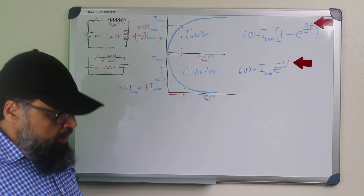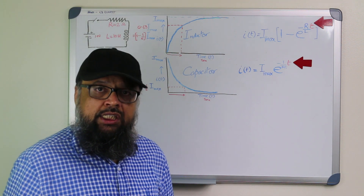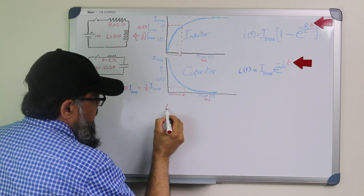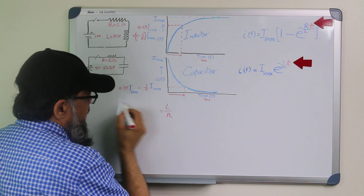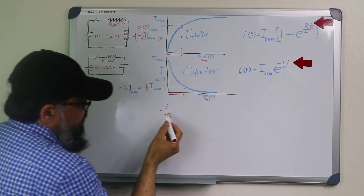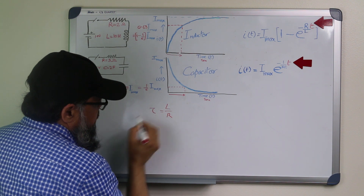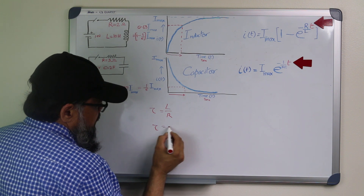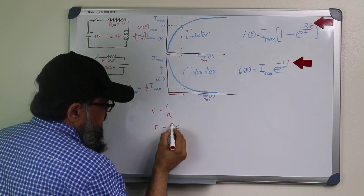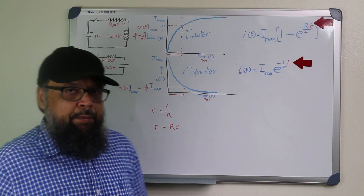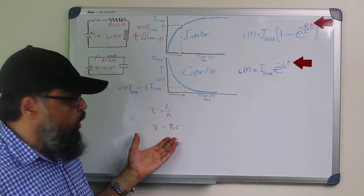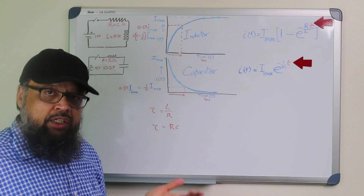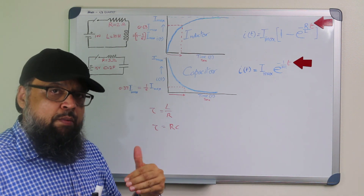What is this time constant? When you use these types of questions, you use a time constant of L divided by R for RL-type circuits, denoted by tau. And for RC-type circuits, the time constant is RC — where R is the resistance and C is the capacitance value. So how do we arrive at these formulas? Why do we use these formulas for the time constant? This is what we are discussing in this video.